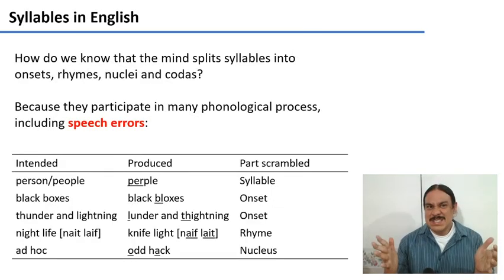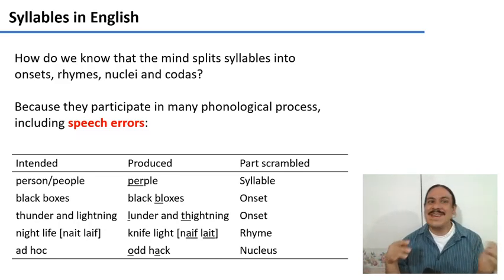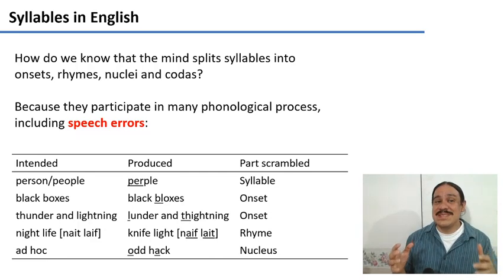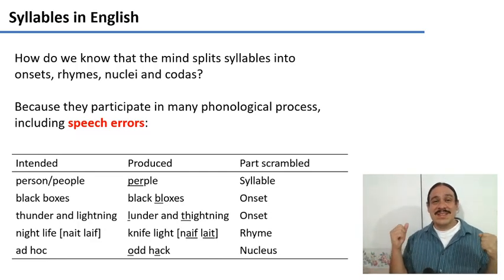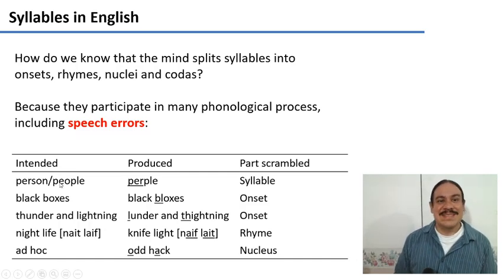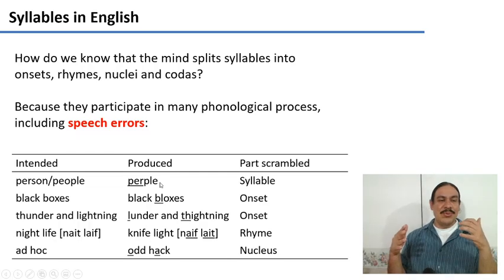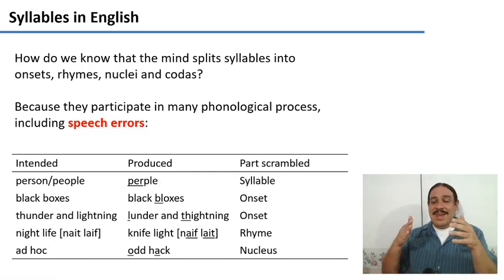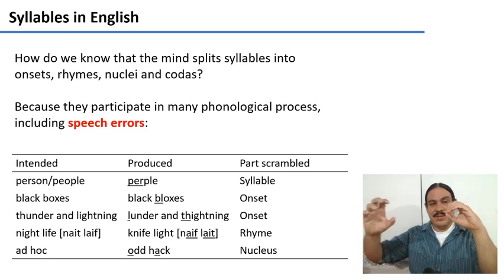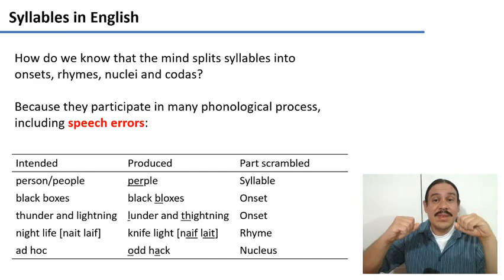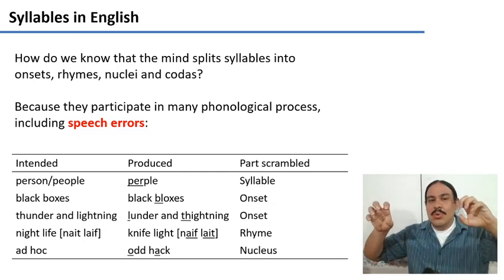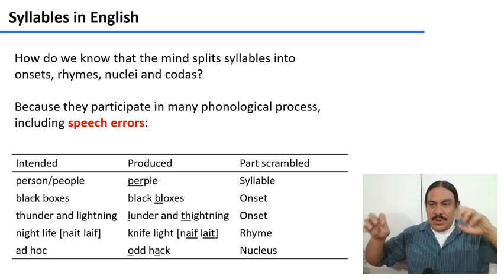How do we know all these things exist? How do we know that the brain is actually splitting things into onsets and rhymes and nuclei and codas? Because these components participate in phonological processes. And one of the most interesting ones is speech errors. So have you ever tried to talk so fast that you end up mashing two words together? For example, you try to say person and then try to say people at the same time and you end up with something like purple. So your brain is trying to say both at the same time and then the components of the word get meshed together. But because we get the first syllable of the first word and the second syllable of the second word, we know that these words were split in syllables so that these components, when the words collided, these two components were separated from the other syllables in the word and they were the ones who survived.